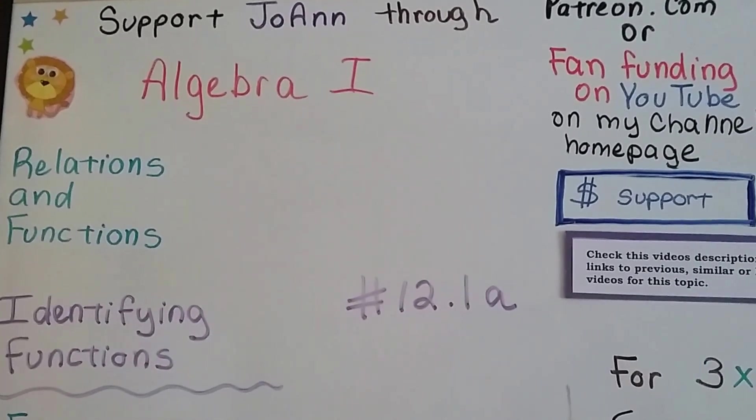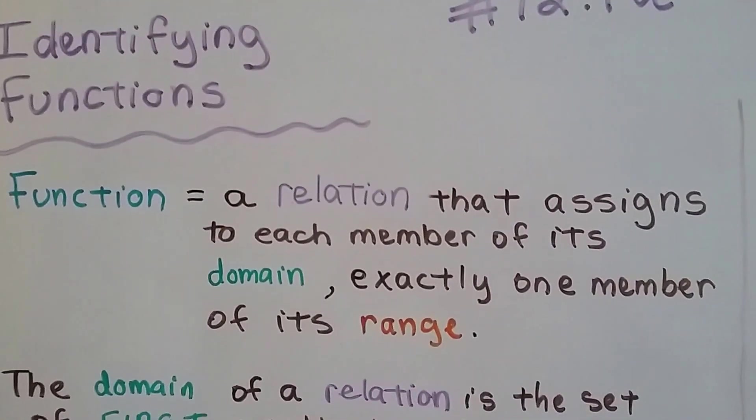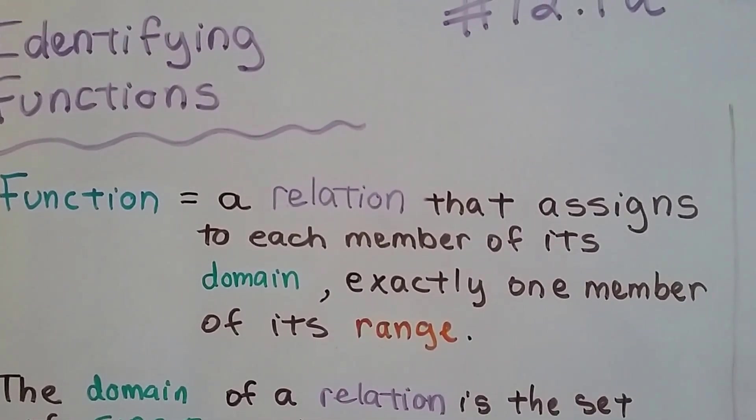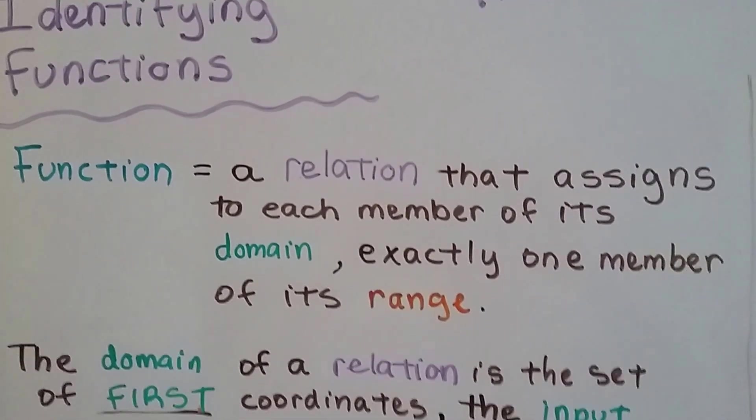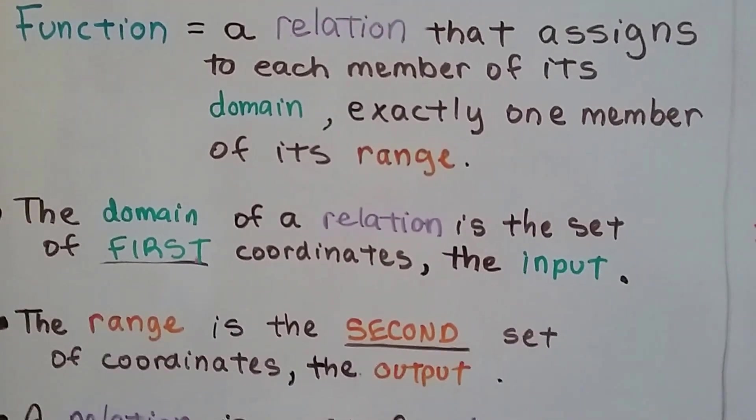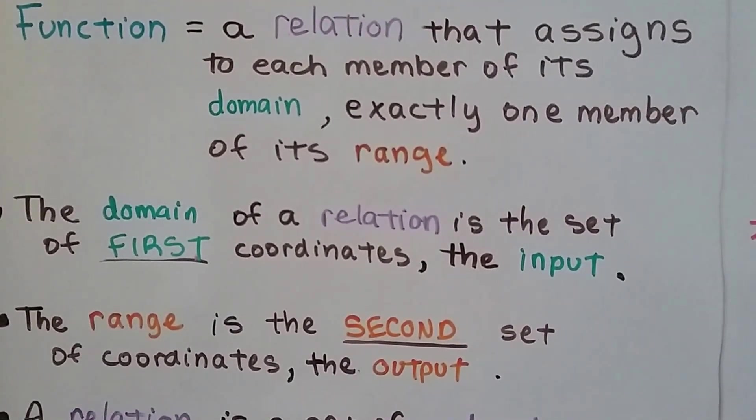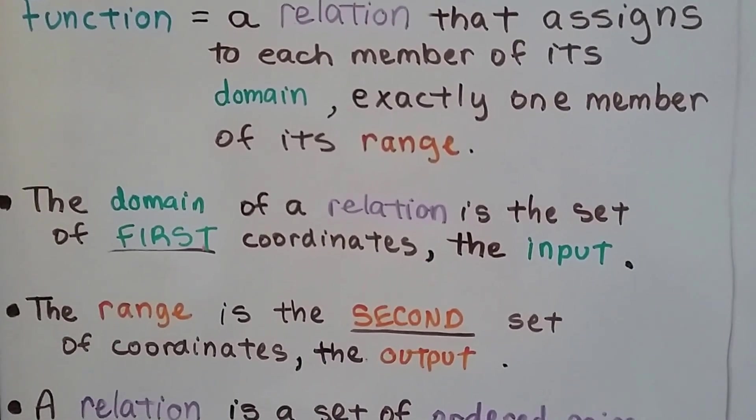I'm going to show you how to identify functions. So the formal definition of a function is, it's a relation that assigns to each member of its domain exactly one member of its range. But what does that mean? Let's break this down. The domain of a relation is the set of first coordinates, the input. The range is a second set of coordinates, the output. The relation is a set of ordered pairs.